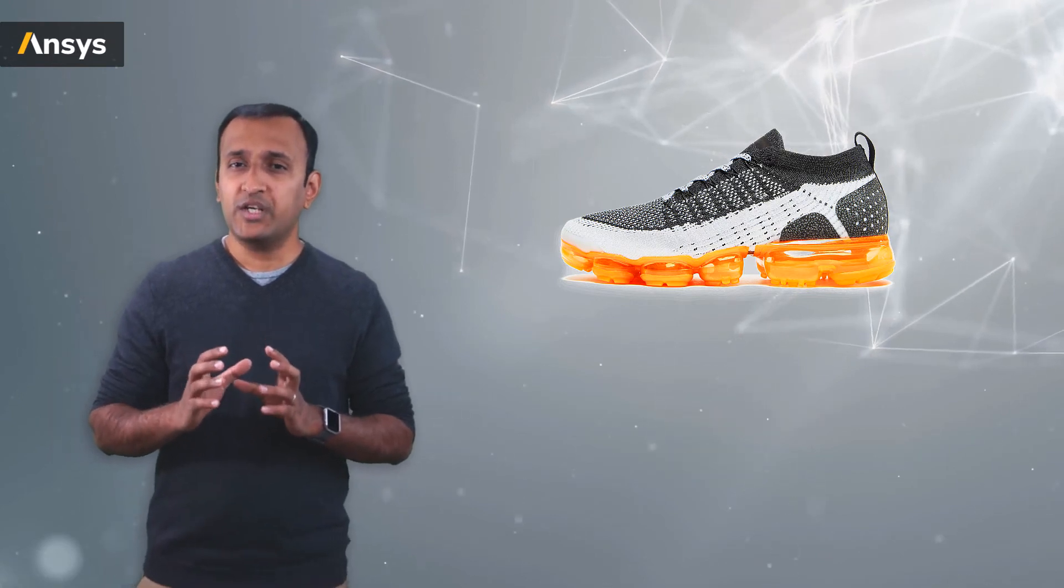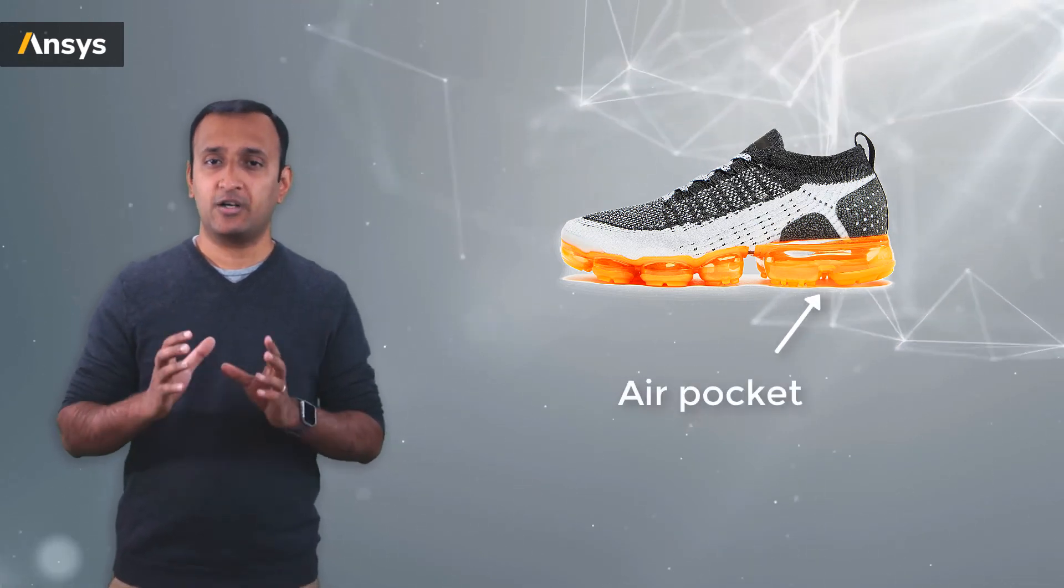So one genius way in which the footwear designers have reduced the mass density of the shoes is by introducing air pockets inside the shoe sole as part of the design. As a result, the mass of the shoe is reduced without affecting its volume, so the mass density drops automatically.